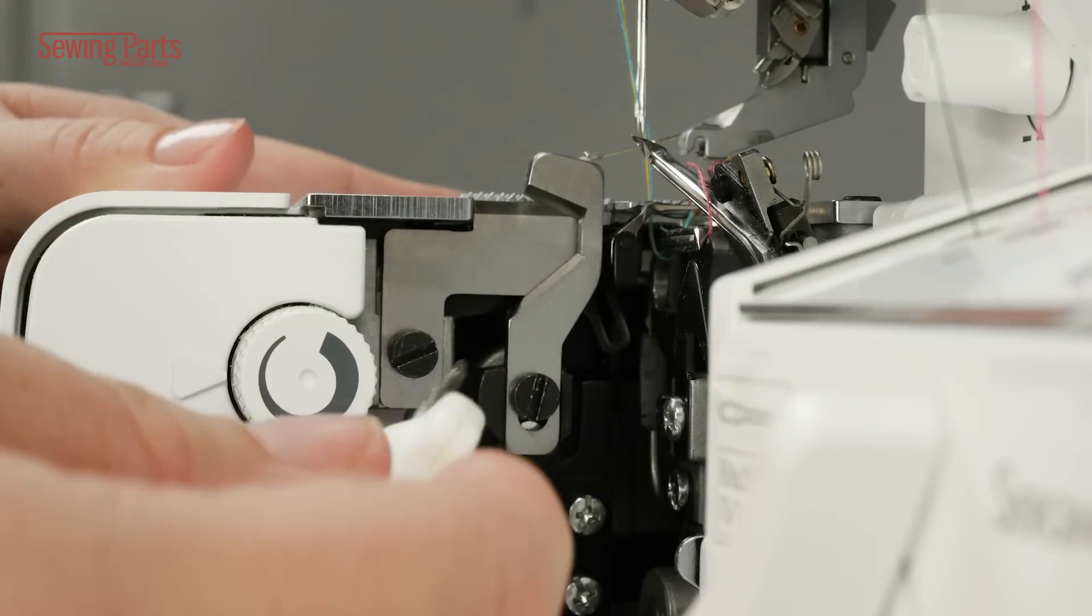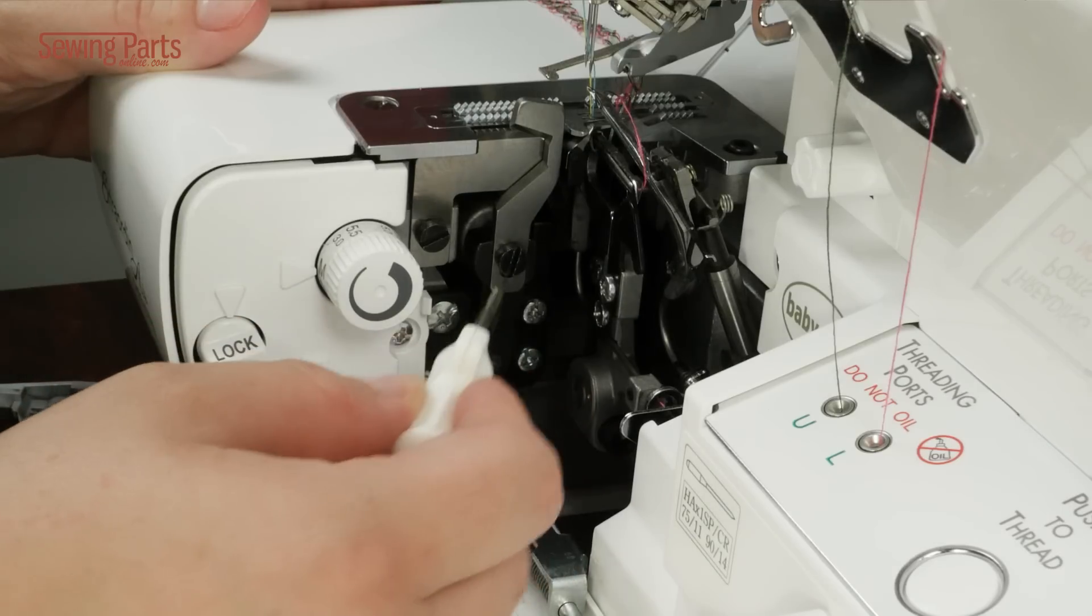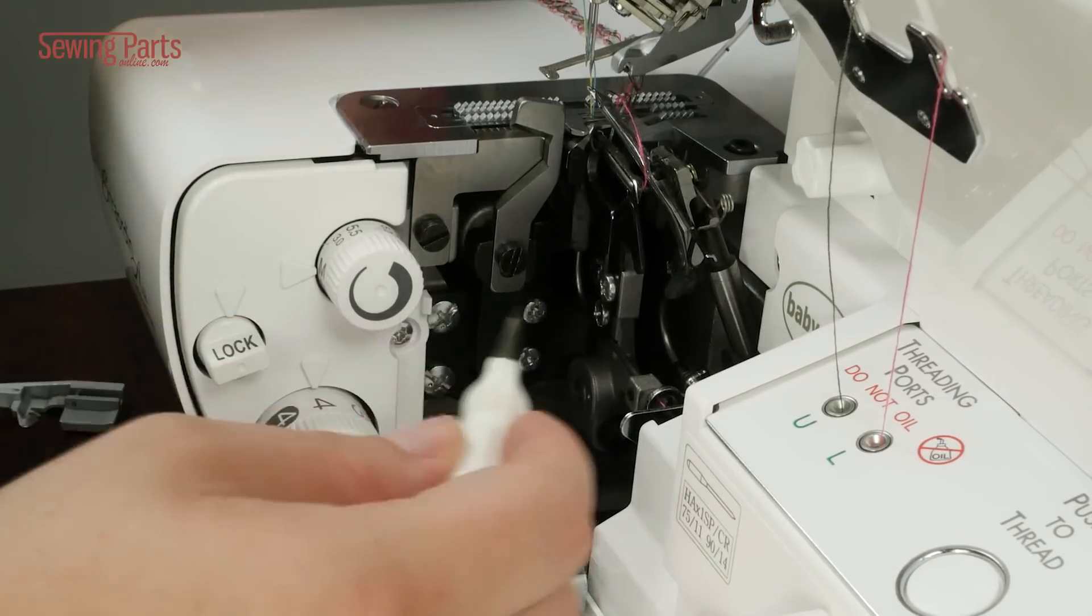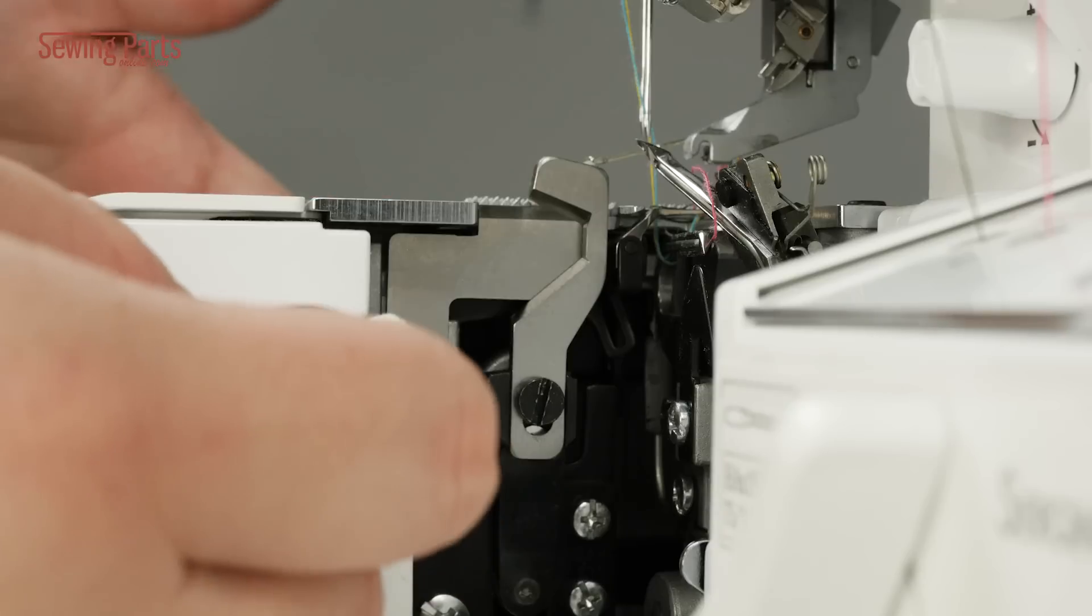You've got your upper knife and your lower knife. This is generally how most home sergers look as far as their knife setup. Right now we're using a Baby Lock, but my Singer looks just like this.